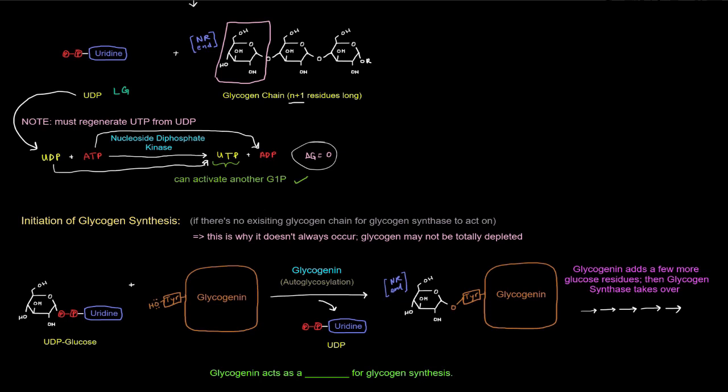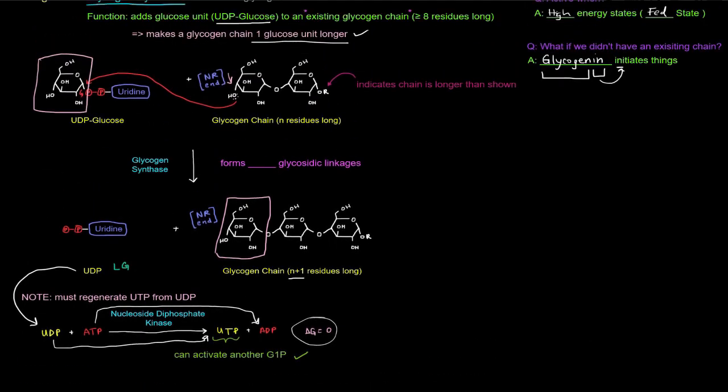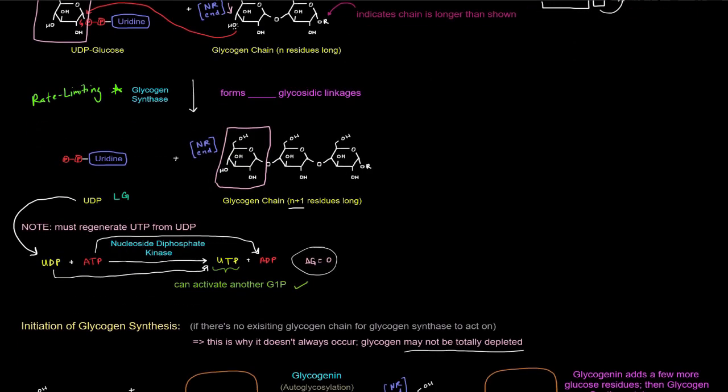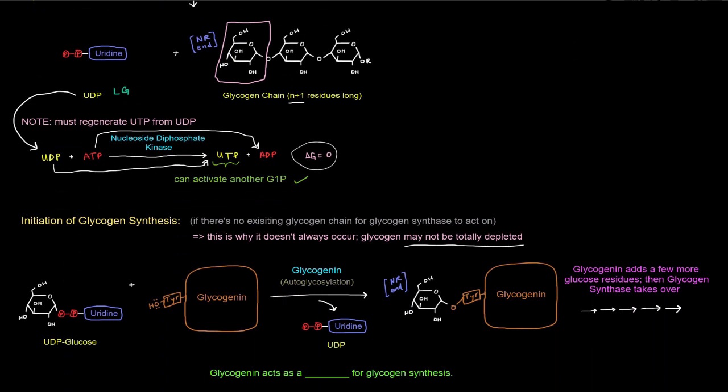But this doesn't always occur because glycogen may not be totally depleted. So when we really think about glycogen synthesis, we're typically thinking about glycogen synthase being the rate limiting step. So this is rate limiting and therefore regulated.